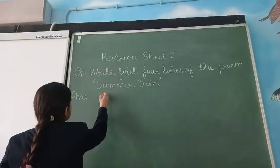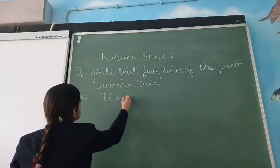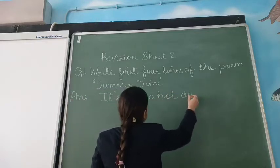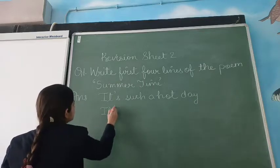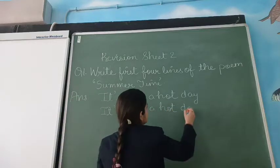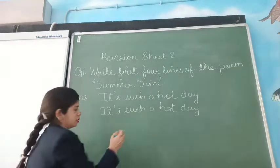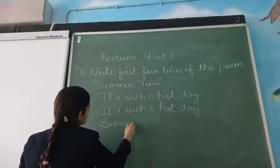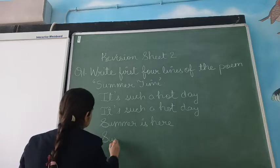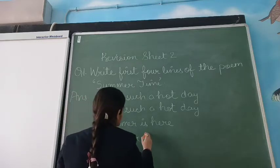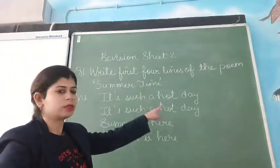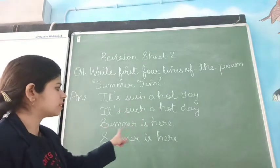So let us just see how you have to write, summer time. First line is, it's such a hot day. Second line is, it's such a hot day. Then third line. Summer is here. Summer is here. So children, you were asked to write 4 lines of the poem. You have to, it's such a hot day, it's such a hot day. Summer is here, summer is here.